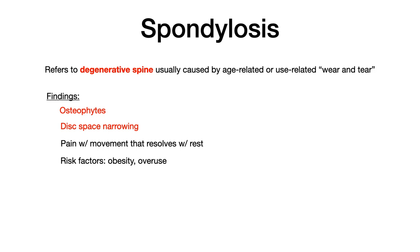In spondylosis you're going to have findings such as osteophytes, which are bony projections that come off of the spine, and disc space narrowing. Those intervertebral discs will be so damaged due to wear and tear that they'll narrow, causing adjacent vertebrae to shear on one another causing more pain and more osteophyte formation. Other findings include pain with motion that gets better at rest — classically these patients don't want to ambulate much.